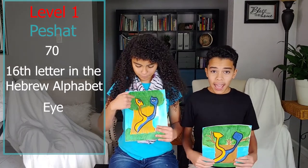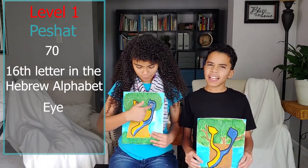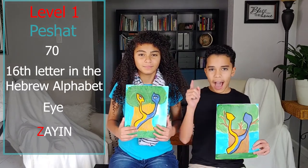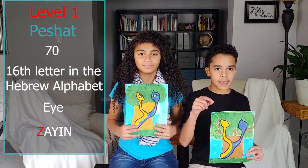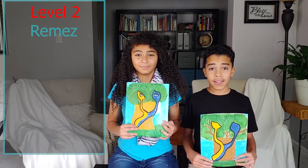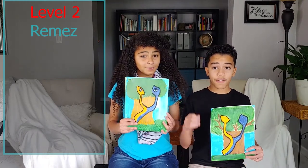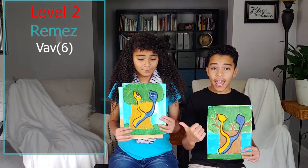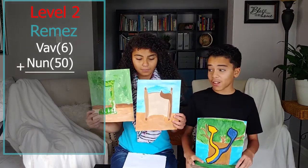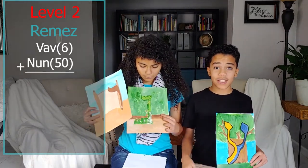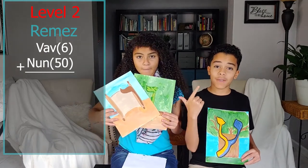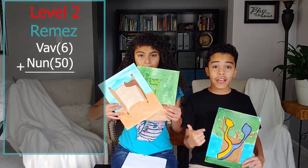It means 'ayin' and it kind of sounds like zayin. The remez level of understanding is that this letter is composed of a vav and a nun. If you add the numerical values together — nun is 50 plus vav is 6 — you get 56.